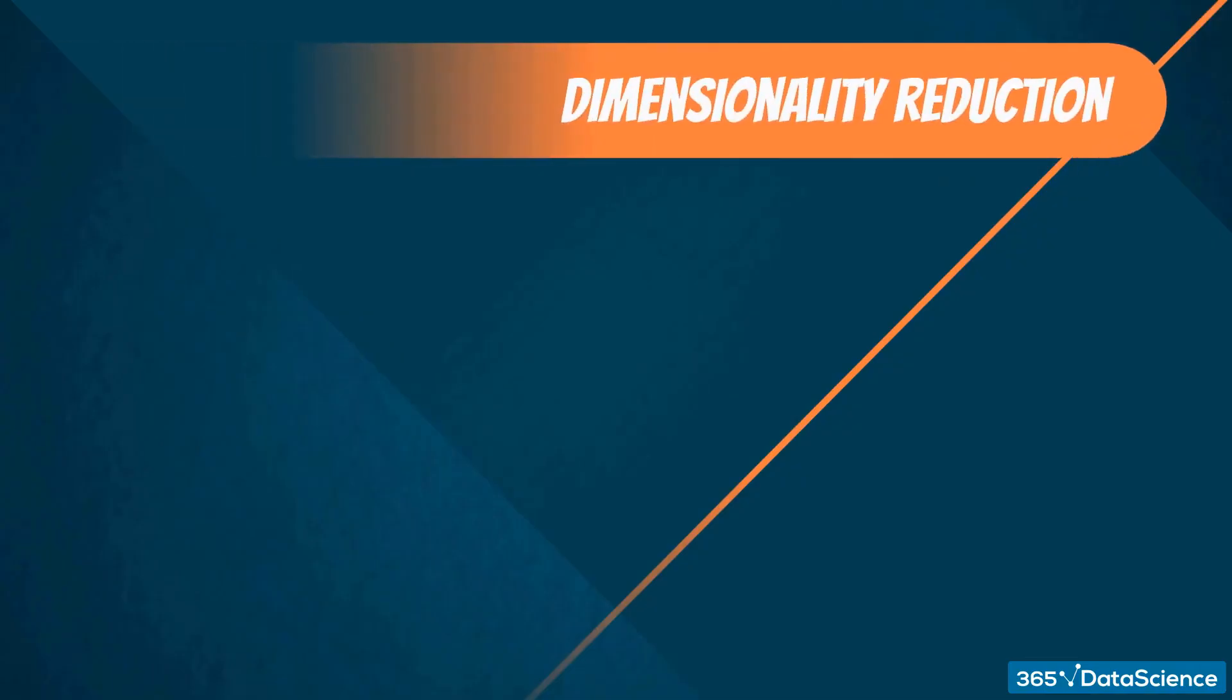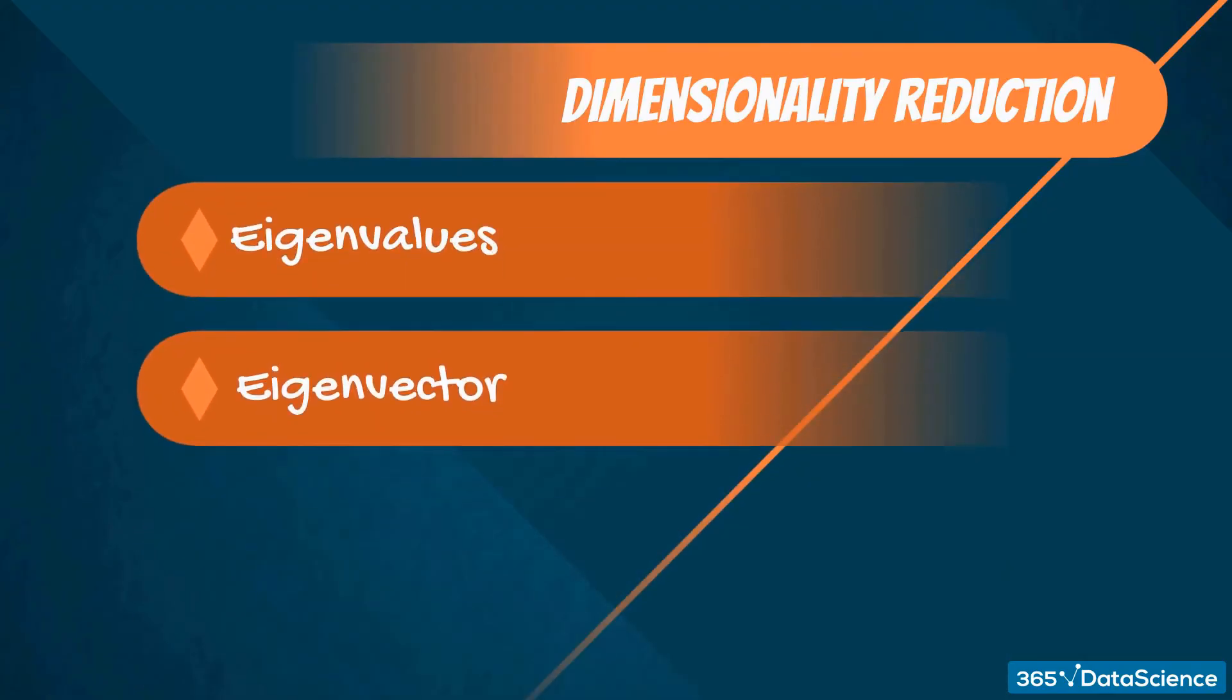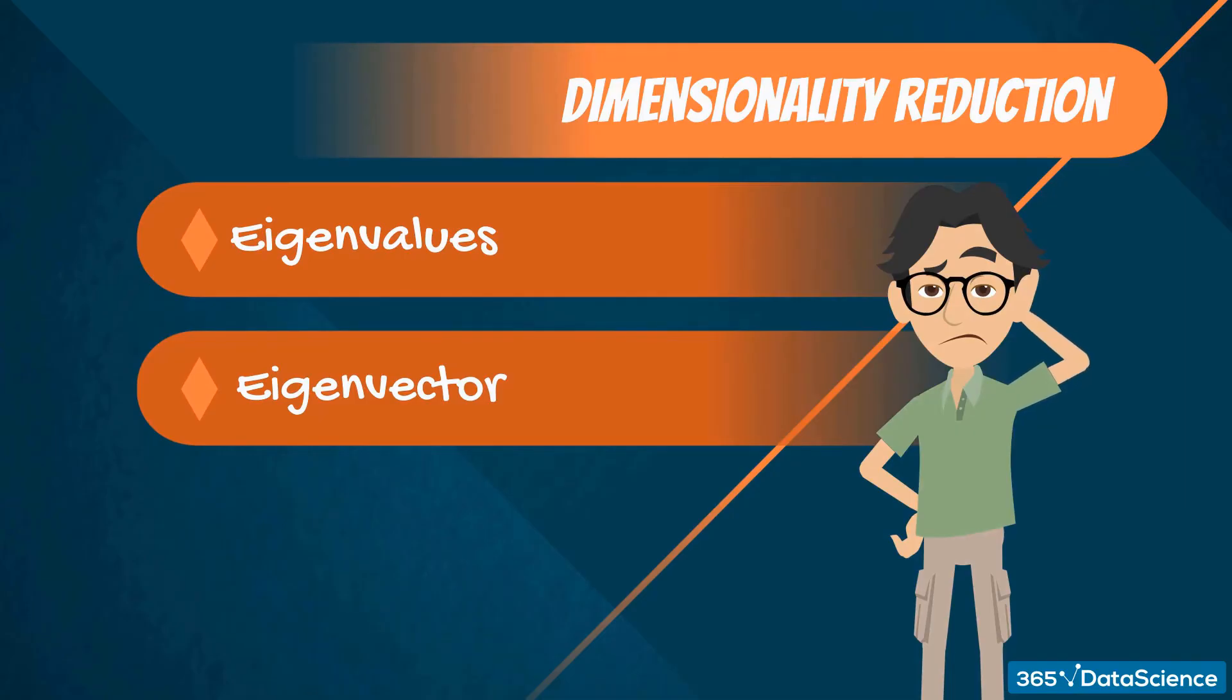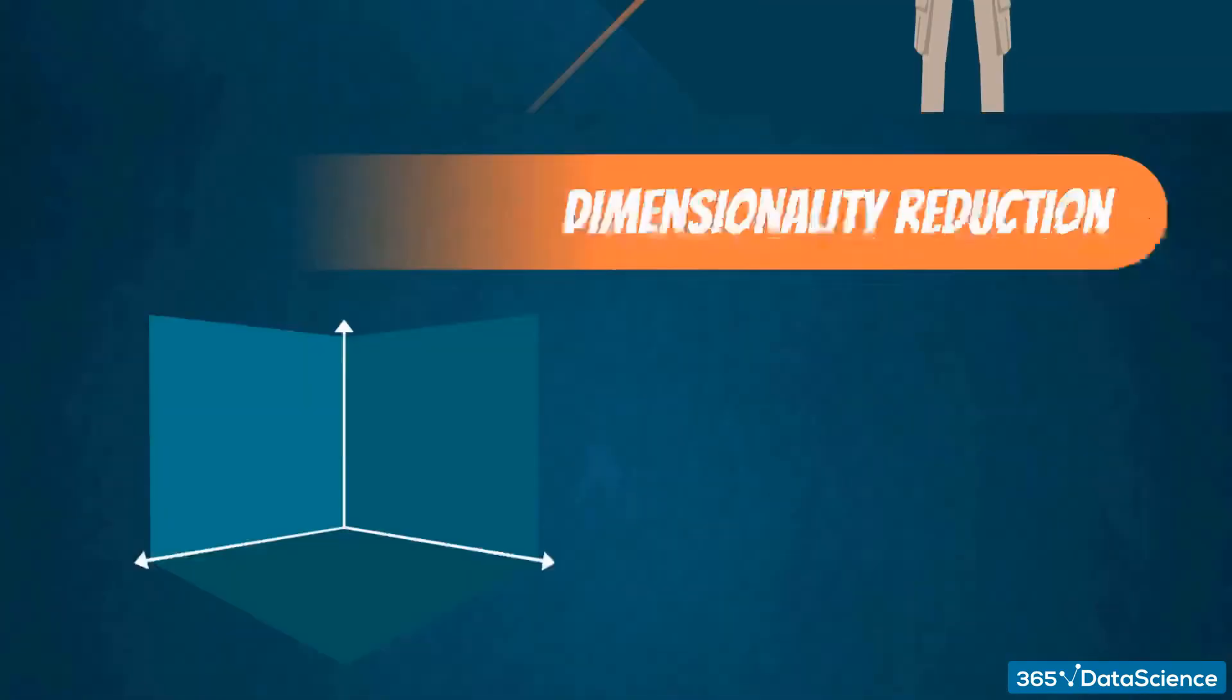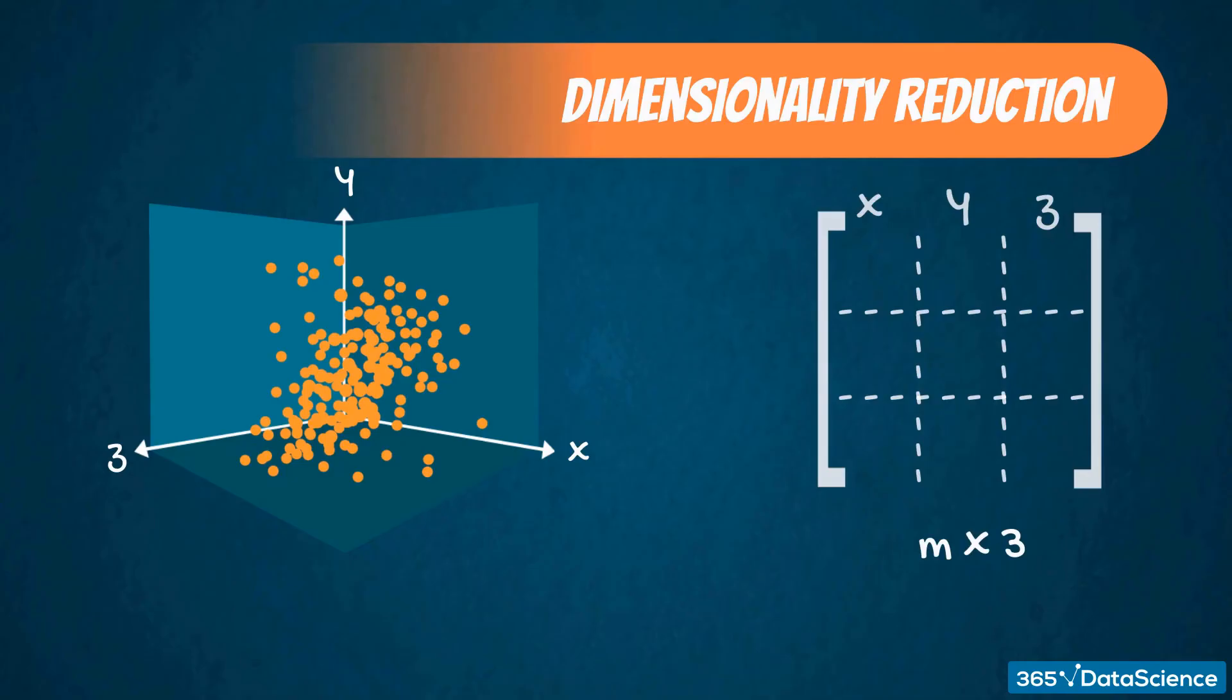Finally, dimensionality reduction. Since we haven't seen eigenvalues and eigenvectors yet, there is not much to say here, except for developing some intuition. Imagine we have a data set with three variables. Visually, our data may look like this. In order to represent each of those points, we have used three values, one for each variable x, y, and z. Therefore, we are dealing with an m by 3 matrix. So, the point i corresponds to a vector xi, yi, and zi.